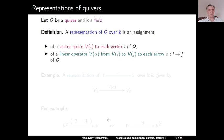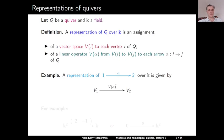For example, if we consider the quiver with two vertices 1 and 2 and one arrow alpha from 1 to 2, then the representation is given by a pair of vector spaces V1 and V2 and one linear operator V of alpha from V1 to V2. More concretely, we can take V1 = K², V2 = K, and V of alpha as the linear operator given by the 1×2 matrix with entries 2 and −1. Another concrete example: we can take V1 as the zero vector space and V2 = K², and then the unique linear operator from zero to K² is the zero operator.